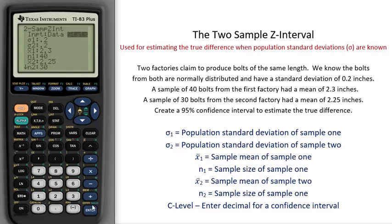Two factories claim to produce bolts of the same length. We know the bolts from both are normally distributed and have a standard deviation of 0.2 inches. In both cases, both factories have a population standard deviation of 0.2. In some problems, the population standard deviation might be different for sample 1 or sample 2.